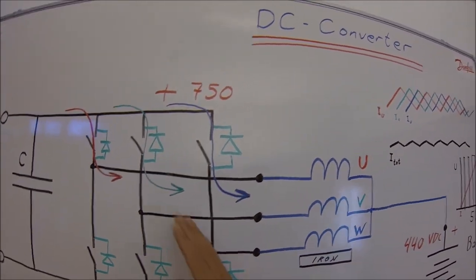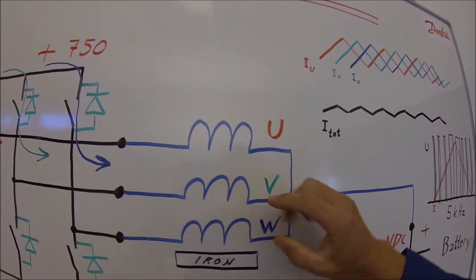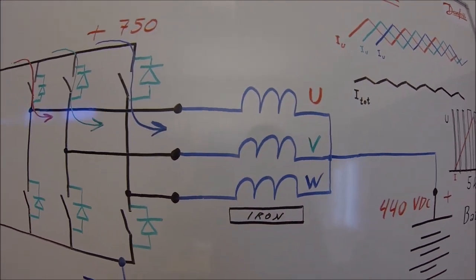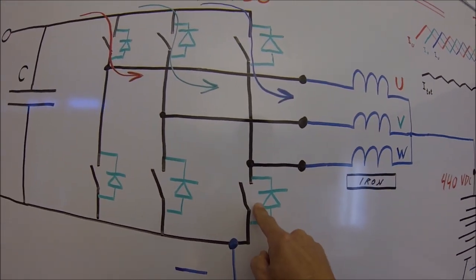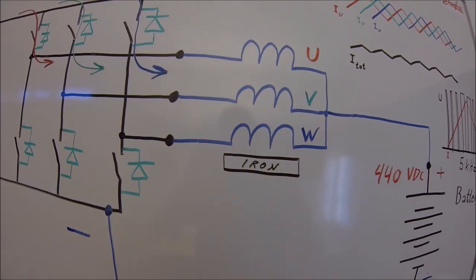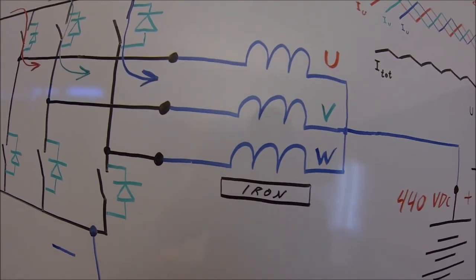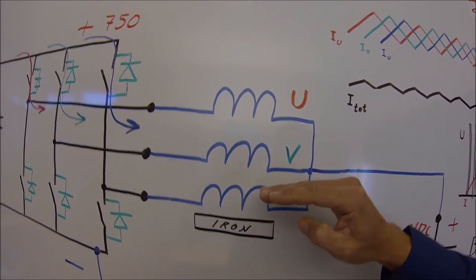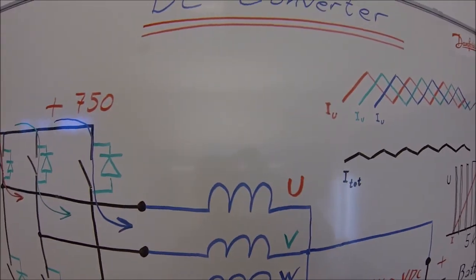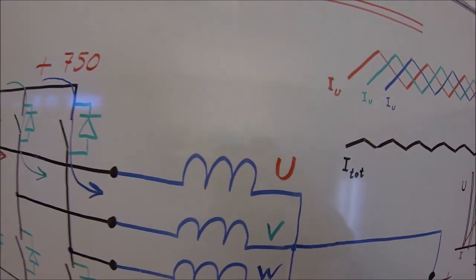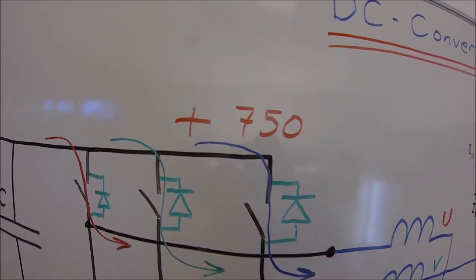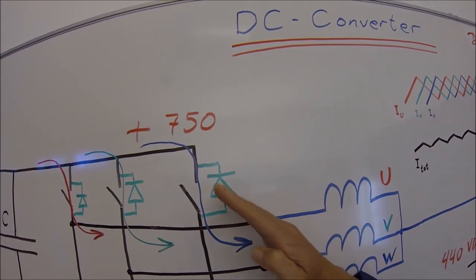What happens with DC boosting is that we set up a small current through the chokes. We saturate the iron and then we cut off the current. We connect these IGBTs, so this potential is the same as this potential. The current is then stopped quite abruptly and the voltage will increase quite rapidly over the chokes. So we are boosting the DC voltage level here.